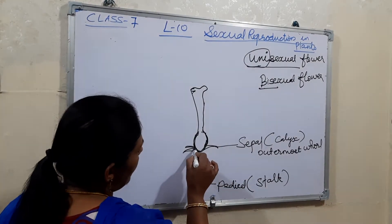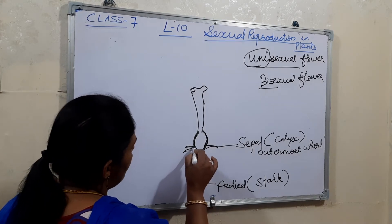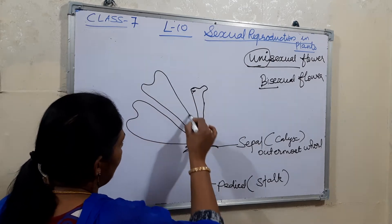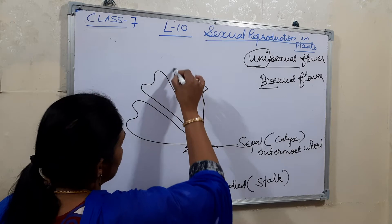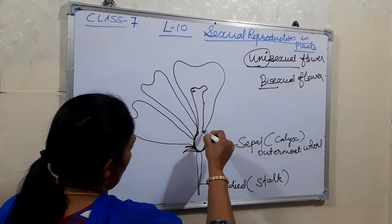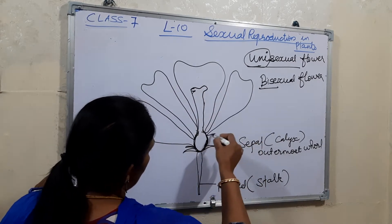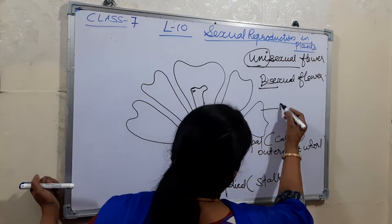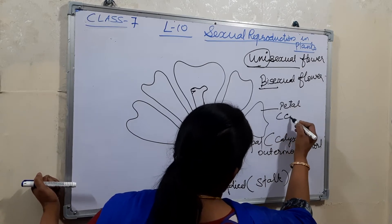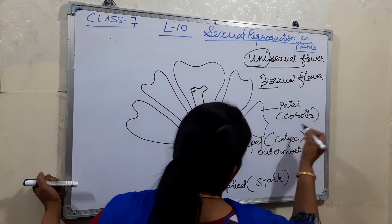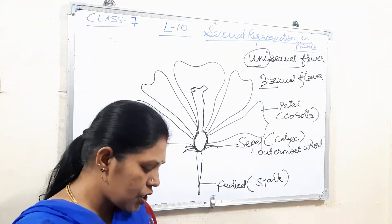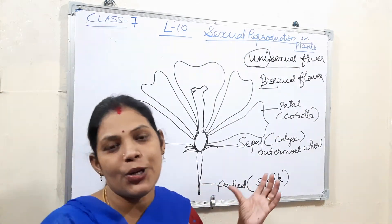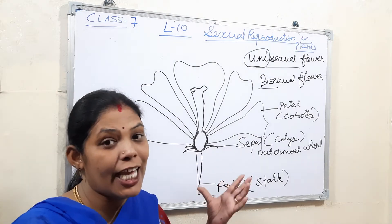The colorful part of the flower is known as the petals, or we can call it the corolla. The petals and sepals actually do not have any direct reproductive role, but they help indirectly.